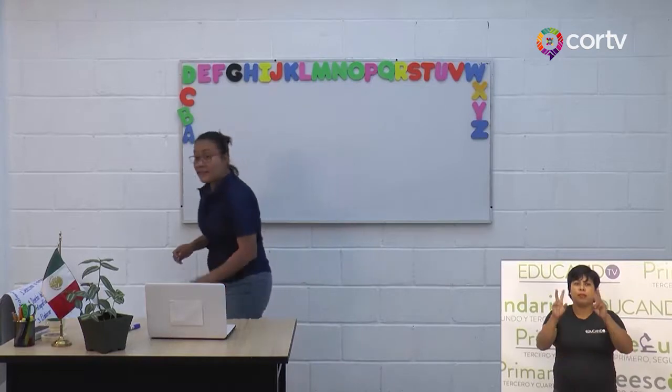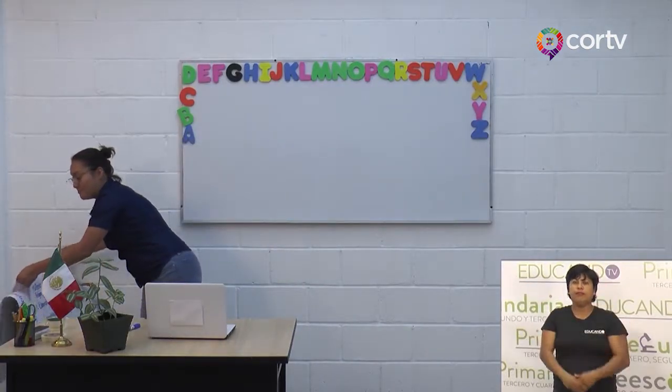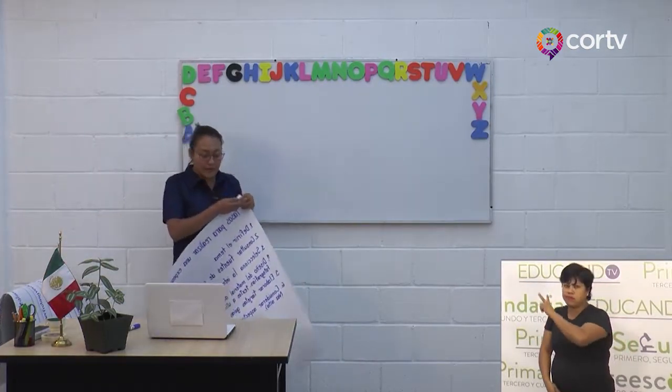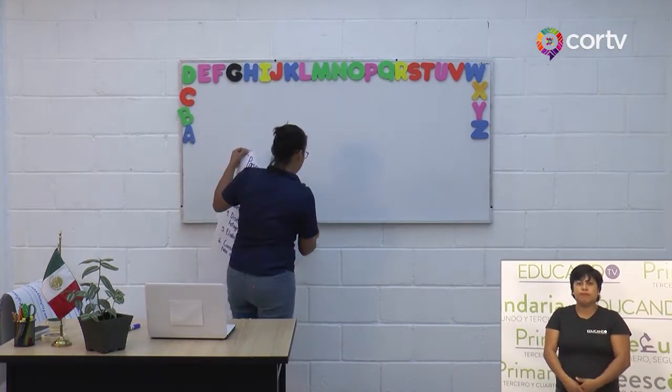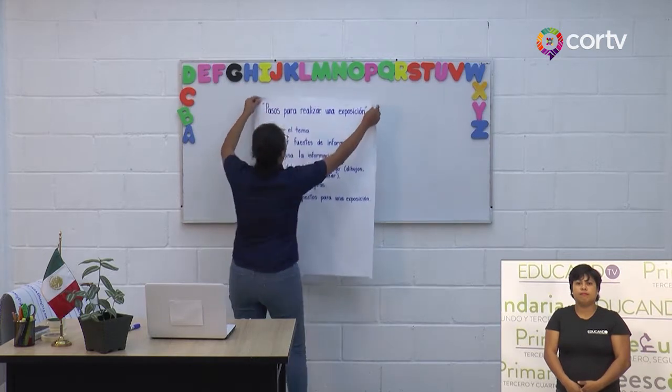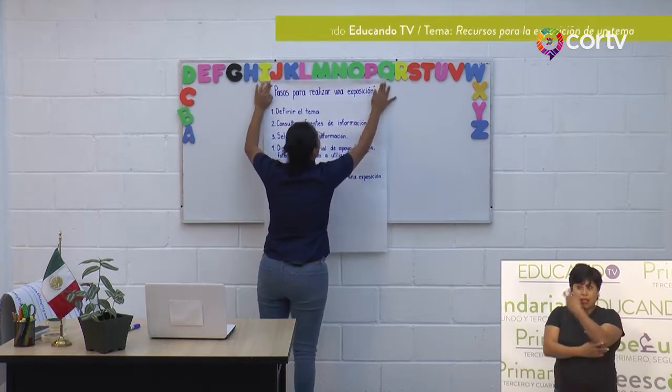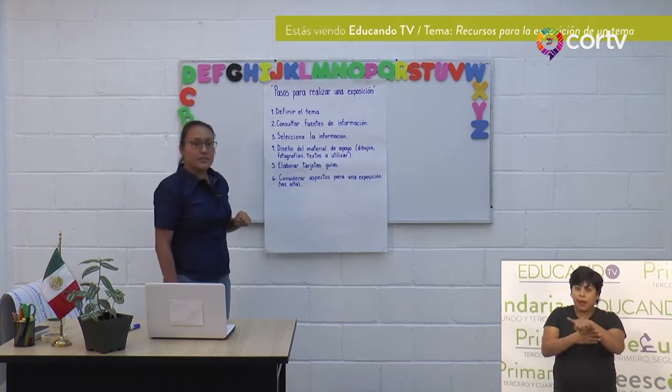Sobre todo, tener claros cuáles son las ideas principales o más importantes que queremos que los demás conozcan. Para esto, voy a mostrarte una lámina con unos puntos sobre los temas de exposición. Observa muy bien y puedes apuntar en tu libreta. Estos son algunos pasos generales para la exposición.